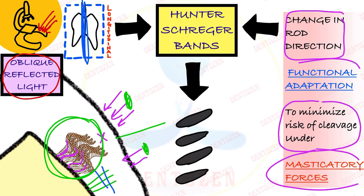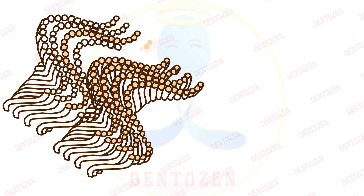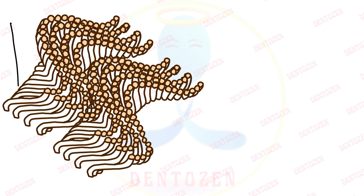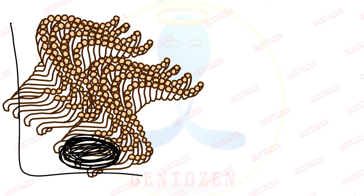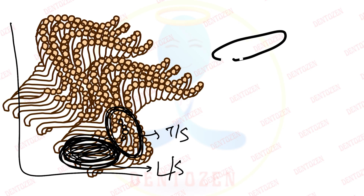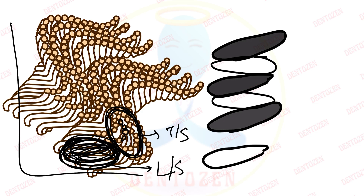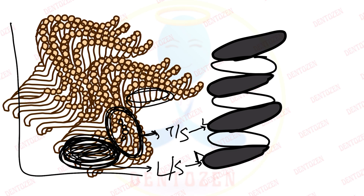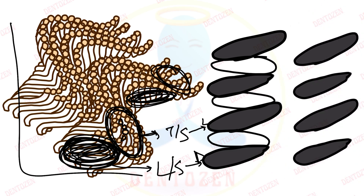In the next part we understand how this change in direction of enamel rods appears as dark and light bands. When we cut the enamel in longitudinal section, some rods are cut longitudinally and some rods in another group are cut transversely, so we see their transverse section. The ones cut longitudinally appear as dark bands on the microscope, and the ones cut transversely appear as light bands. Then another group is again dark, and another group is again light — appearing as alternating dark and light bands.